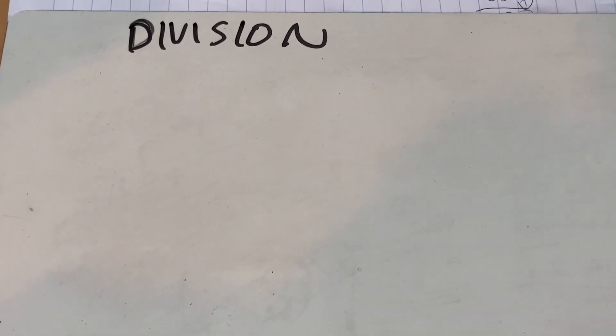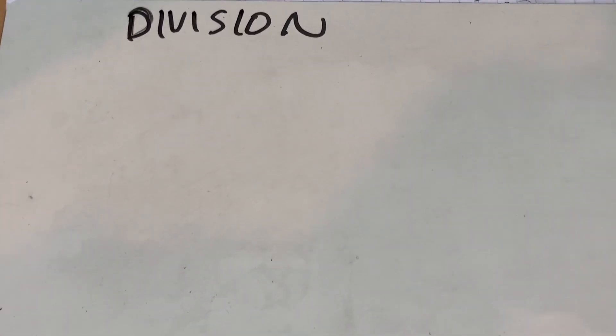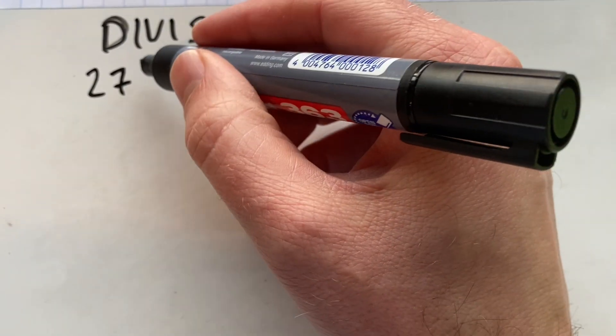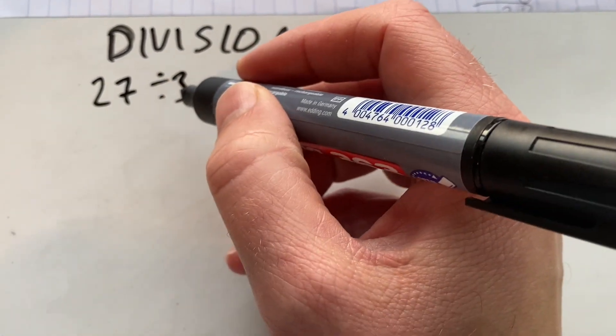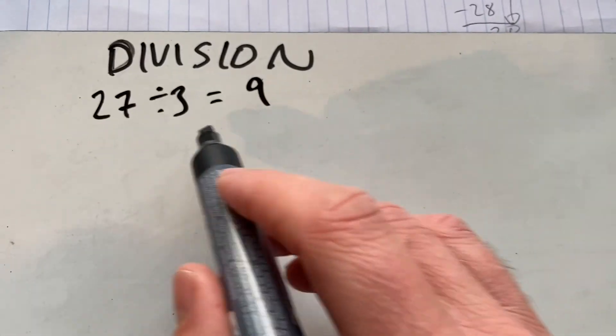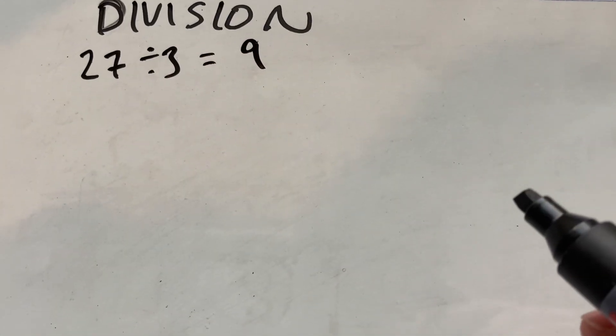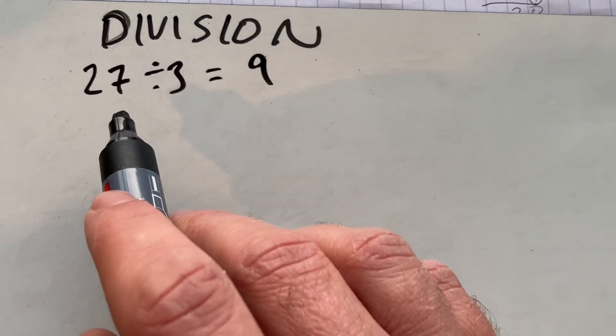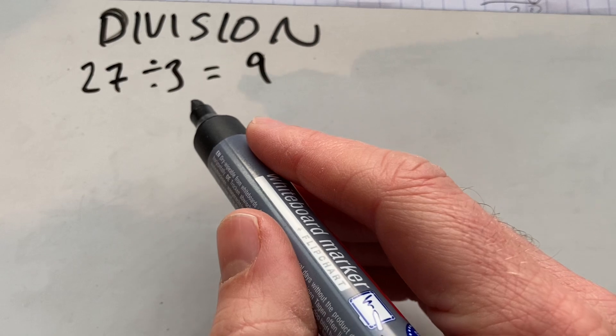Hello and welcome to Maths and Maths. We're doing some division of whole numbers and looking to have a discussion about long division as well. Let's start with division where we know our times tables. So let's say we want to do 27 divided by 3. If you know your times tables, you know that it's 9 because 9 times 3 is 27. The first idea is to know your times tables and know when numbers are multiples of what we're dividing by.